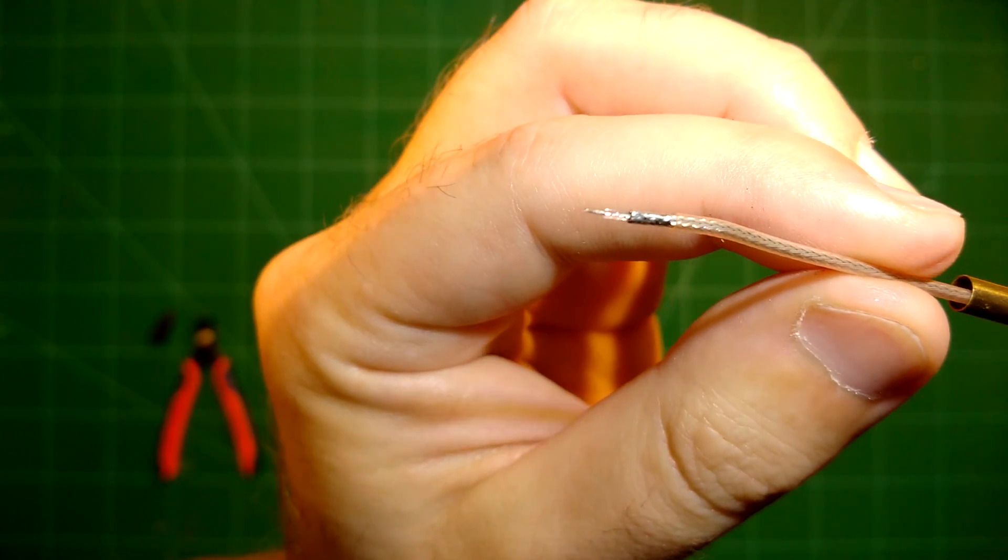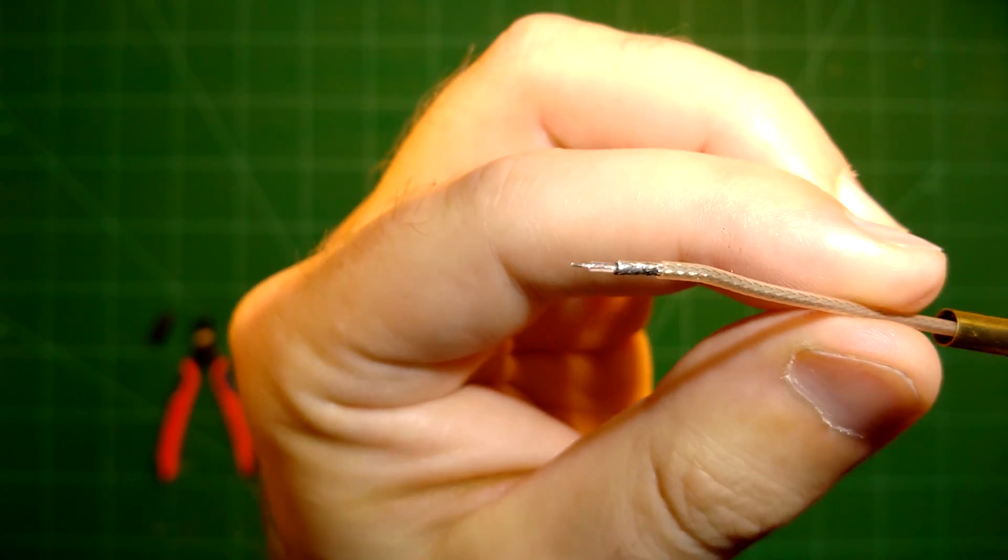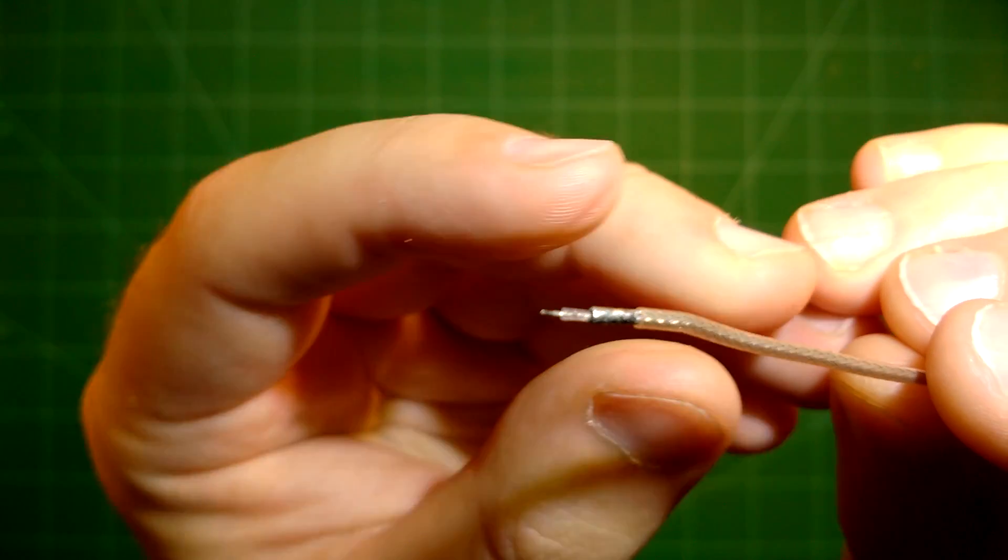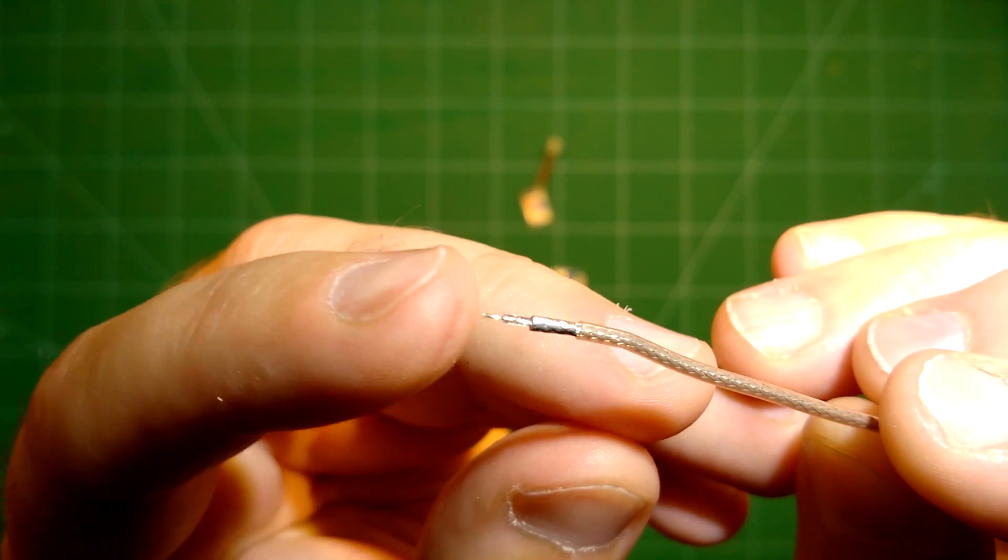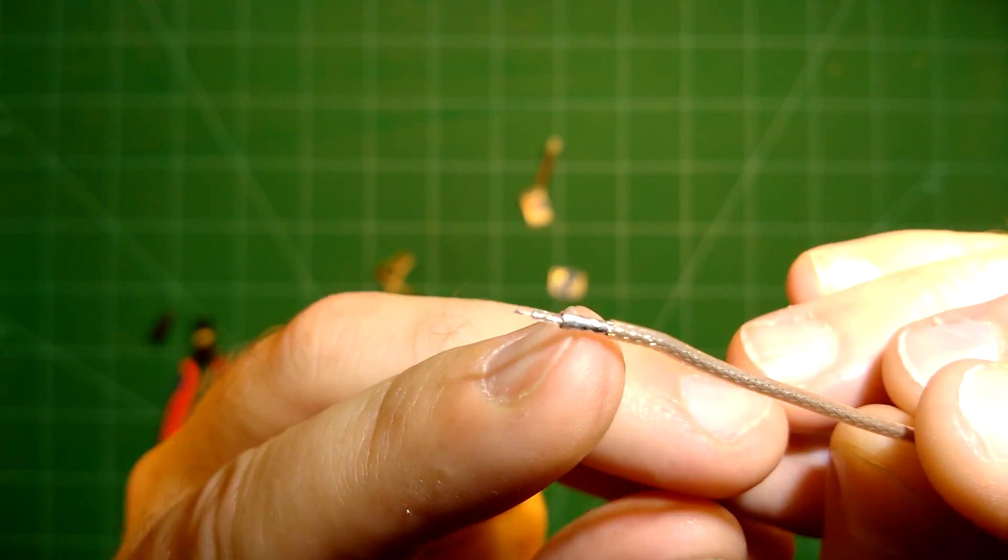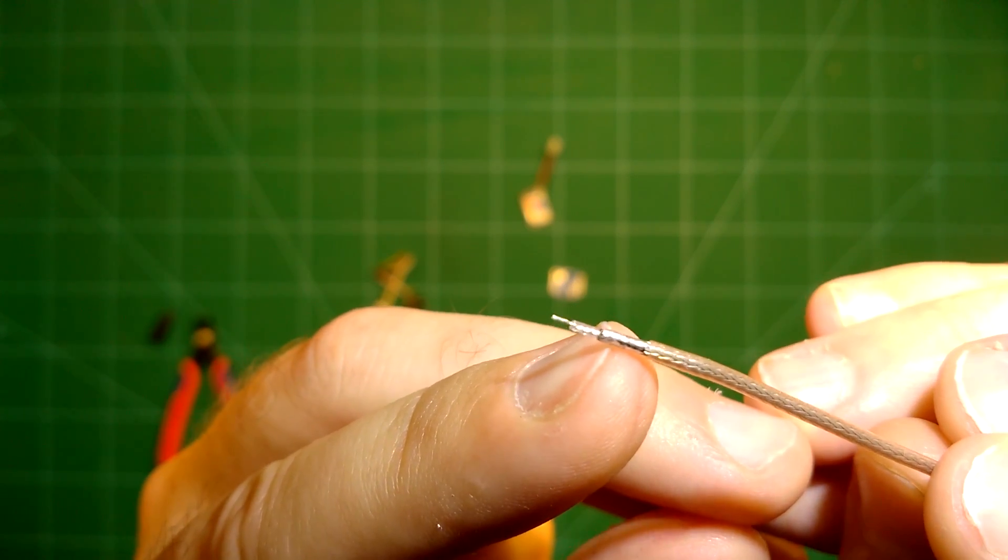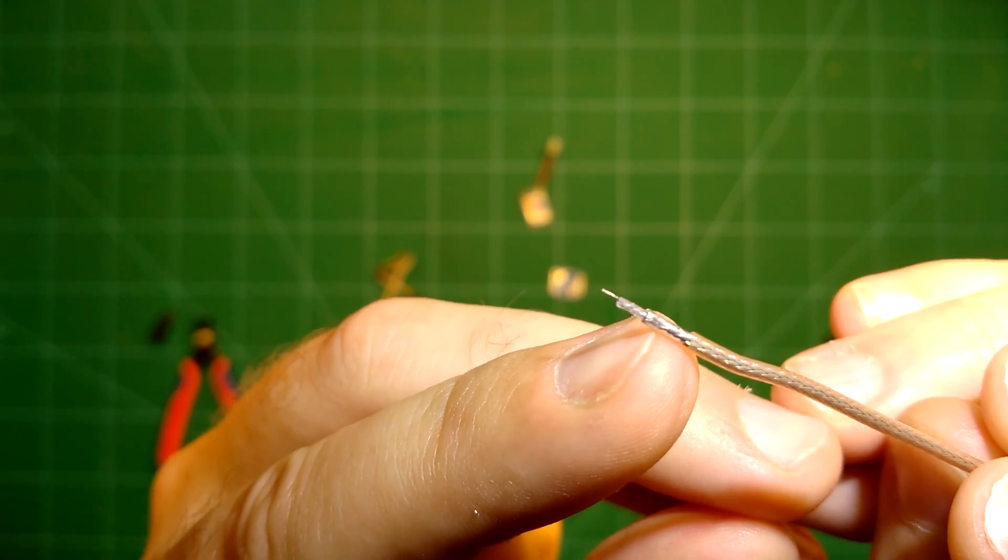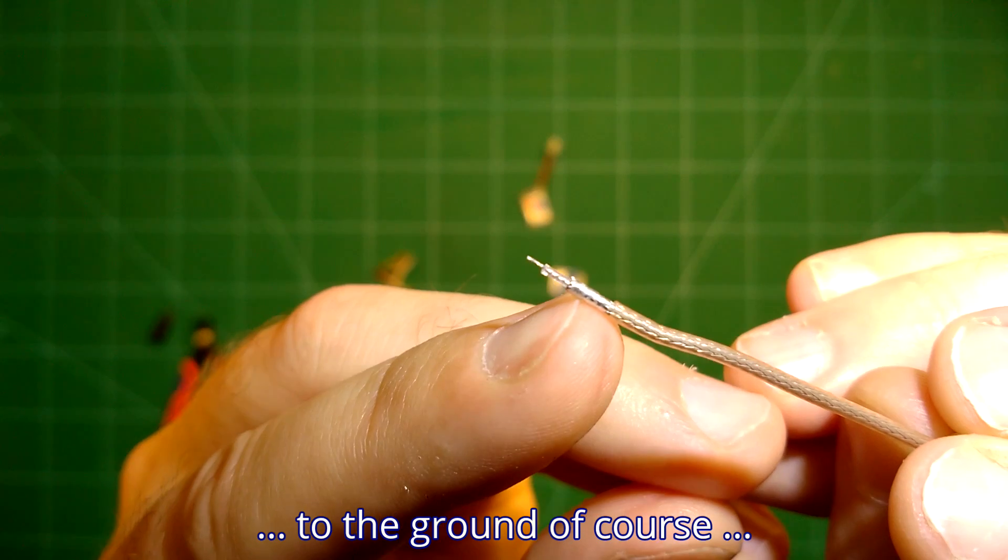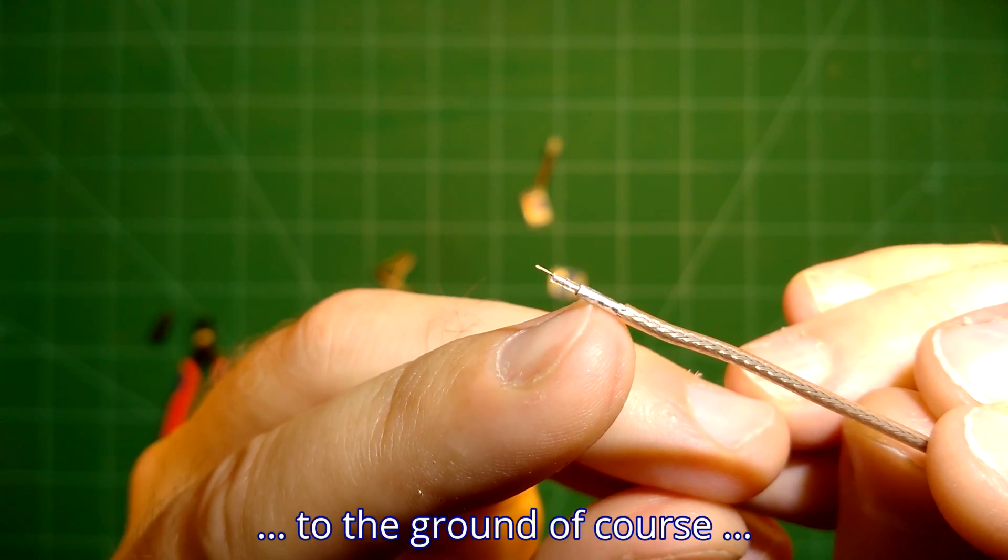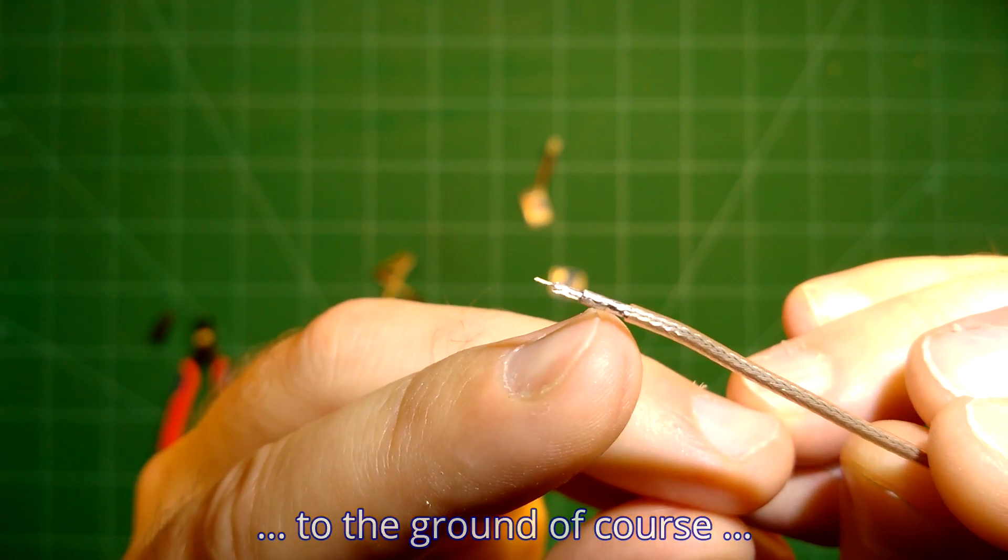As you can see, we have for once the antenna signal here at the end of it. And this here is the antenna shielding which needs to be connected to the mass of your VTX, of your video transmitter.